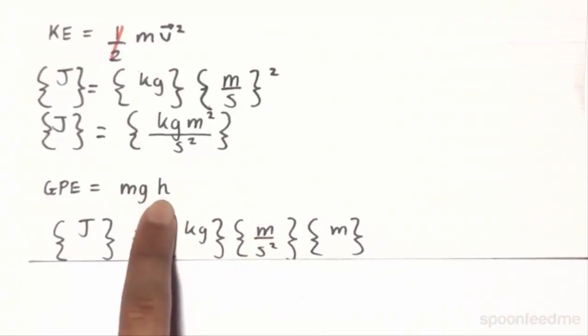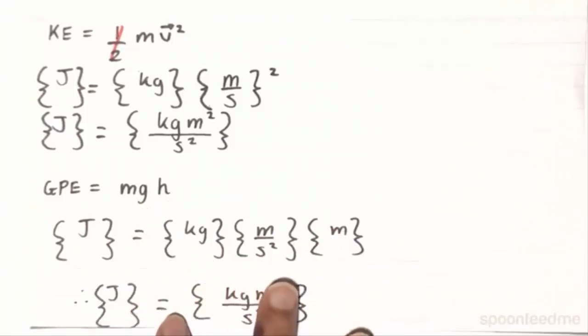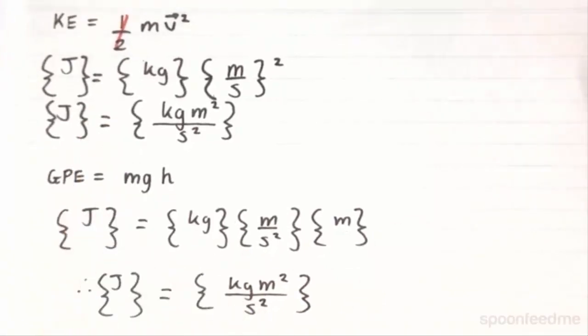And finally, the h, the elevation, is given by meters. So a joule here is equal to a kilogram meter squared per second squared, just like the kinetic energy, which verifies that what we did is correct.